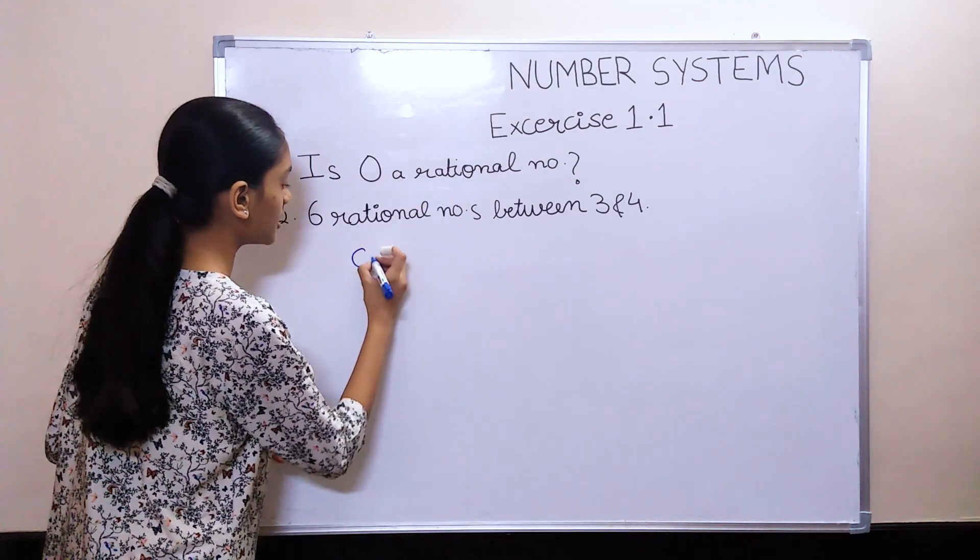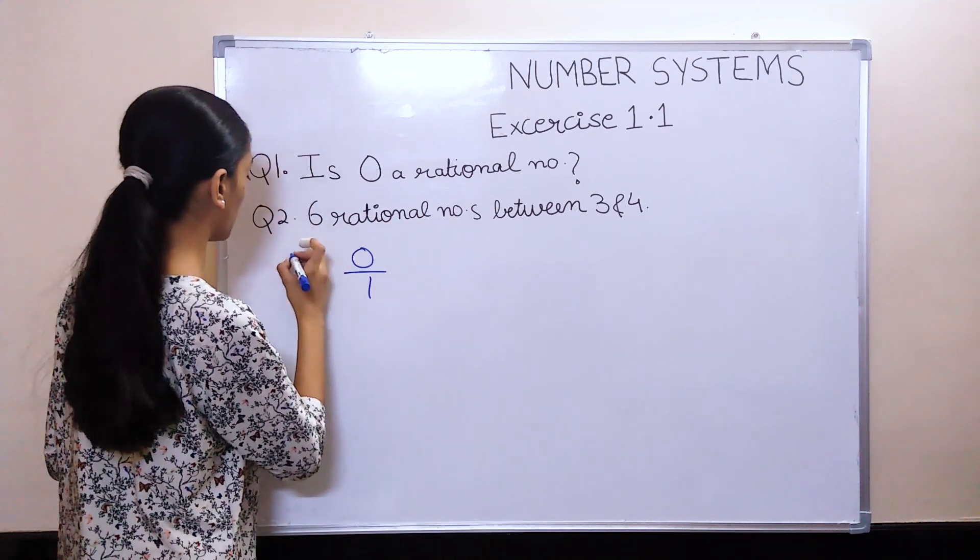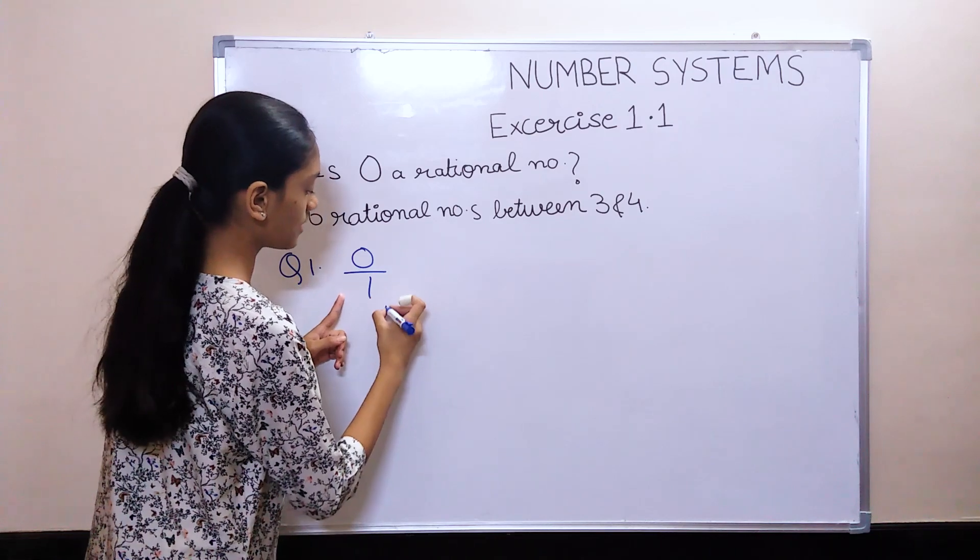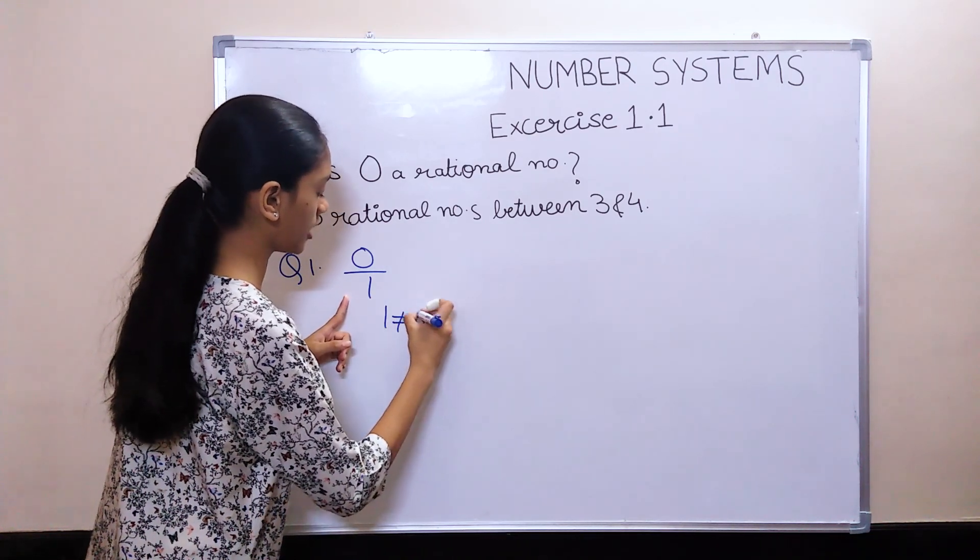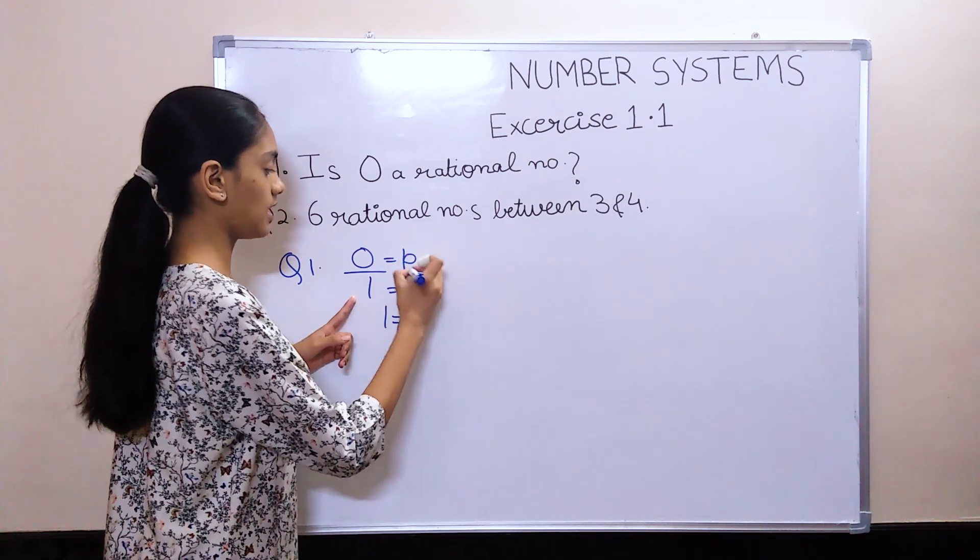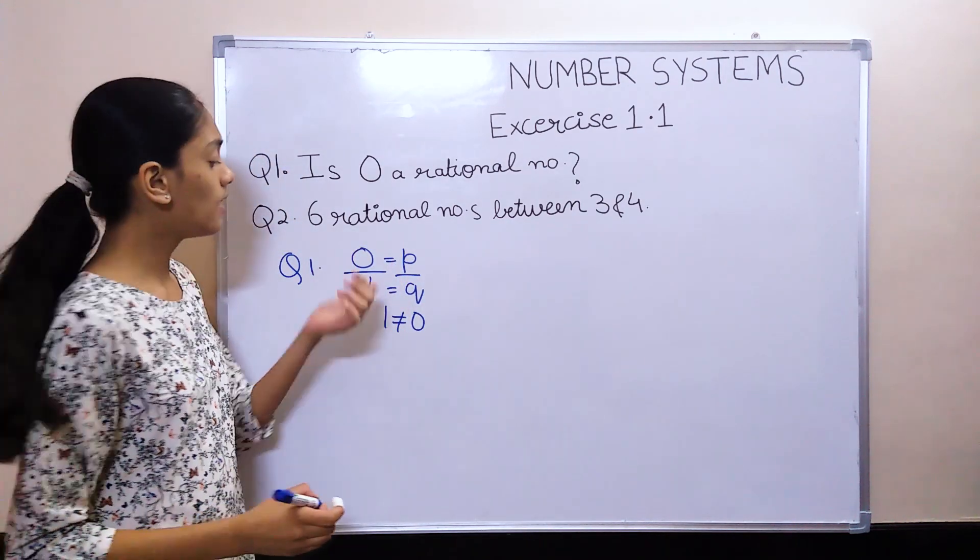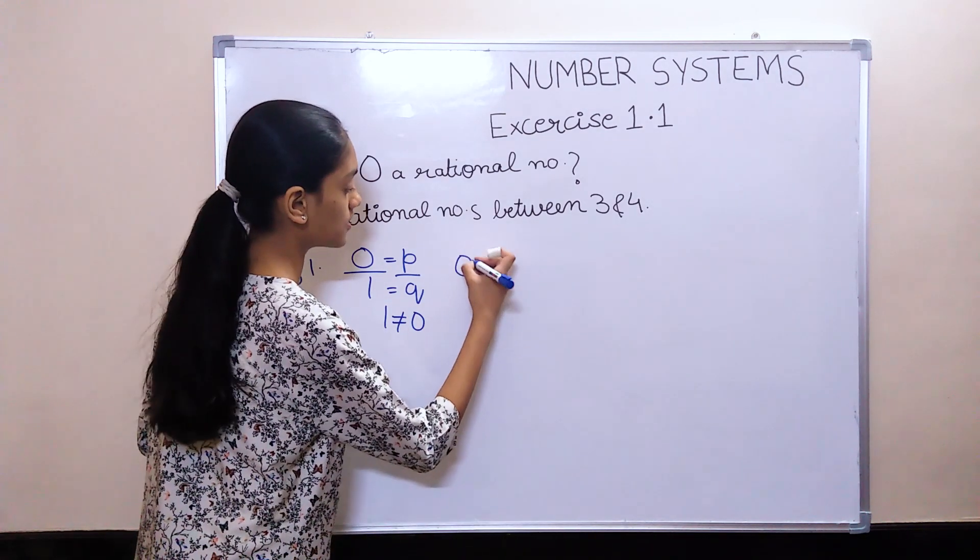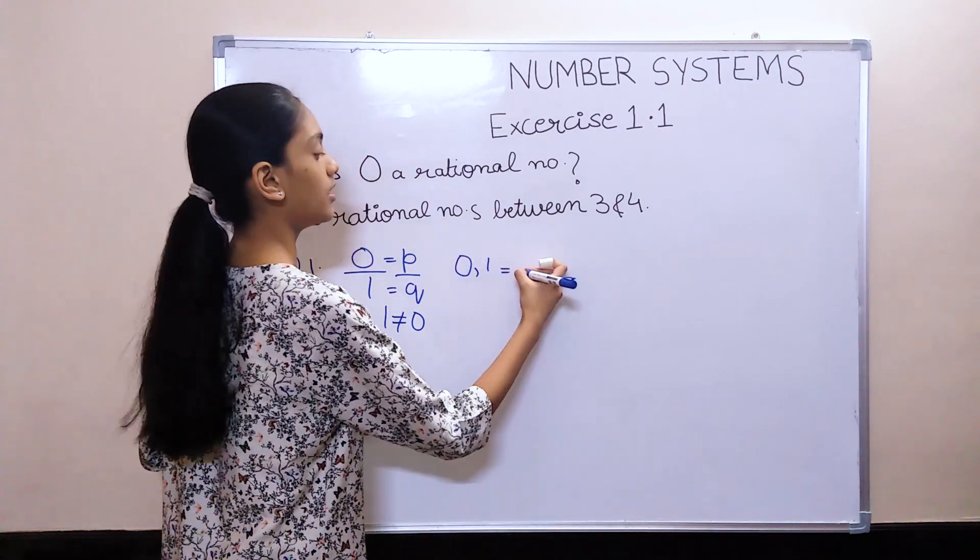Now 0 can be written in the form of 0 upon 1, where 1 is not equal to 0. Here 1 is Q and 0 is P. It is in the form of P by Q and 1 is not equal to 0, and both 0 and 1 are integers.